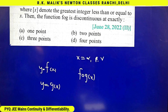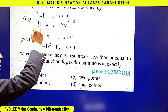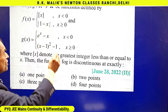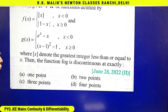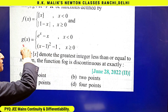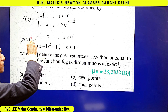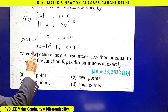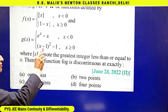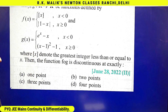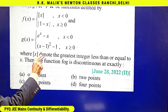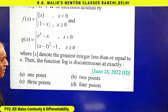It is clear that f(x) is discontinuous at all negative integral values of x and at x = 0. For g(x), the left-hand limit at x = 0 is 1, but the right-hand limit at x = 0 is 0. Hence g(x) is discontinuous at x = 0.